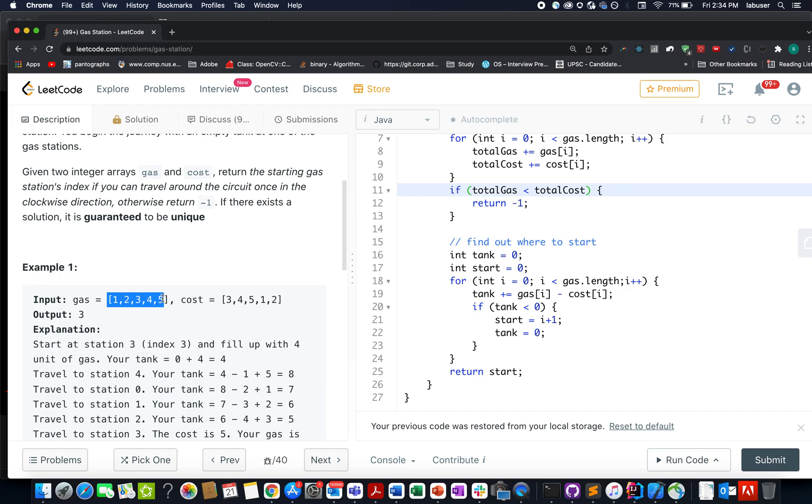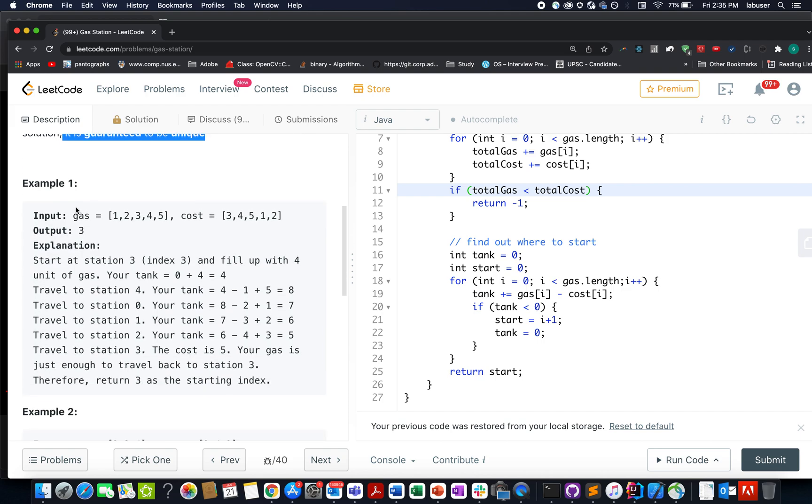There can't be a case where you have two stations through which it will be possible to cover all the gas stations. This is a very important point and in case you missed this you will screw up the solution. So let's quickly move on to the example. I will talk about it in the presentation.